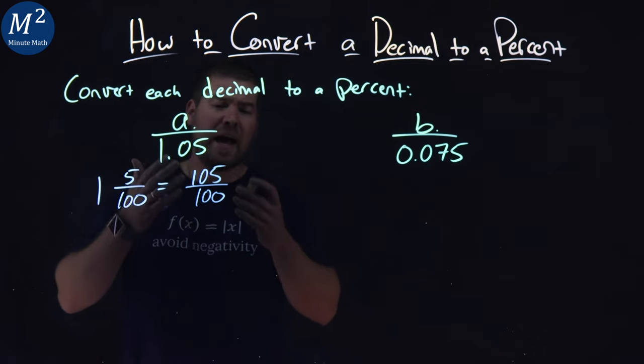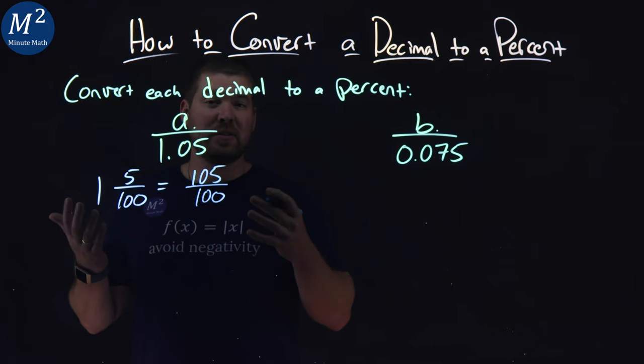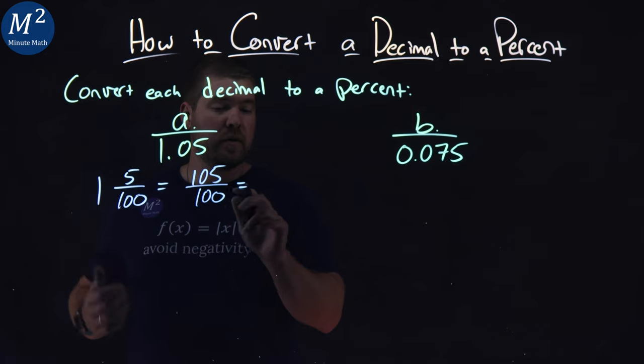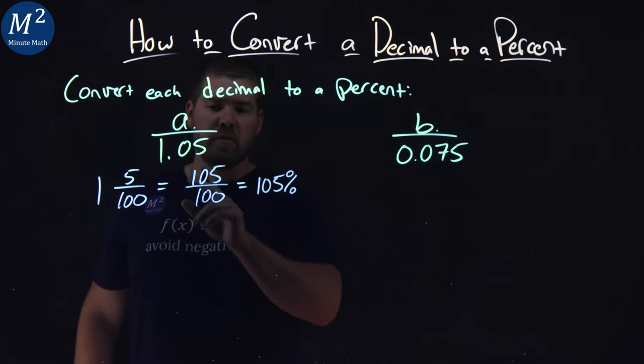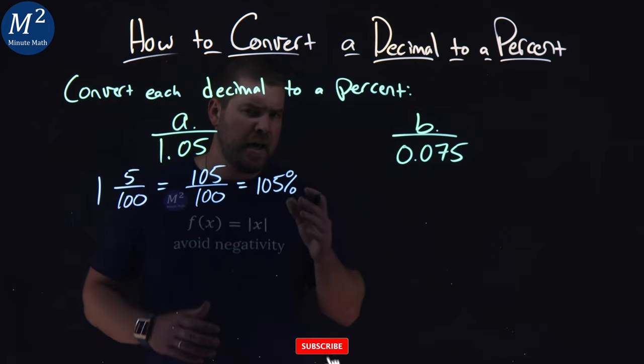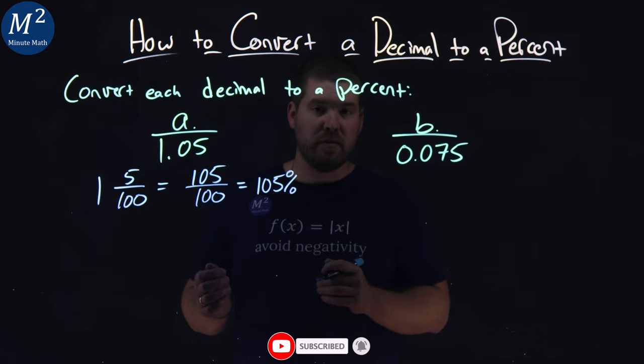This helps us because when we have it in this form, 105 over 100, the numerator is our answer as a percent. 105 over 100 is just 105 percent. So 1.05 is equal to 105 percent. At the end of this video, I'm going to show you the fast way to solve each one of these. This is the traditional way.